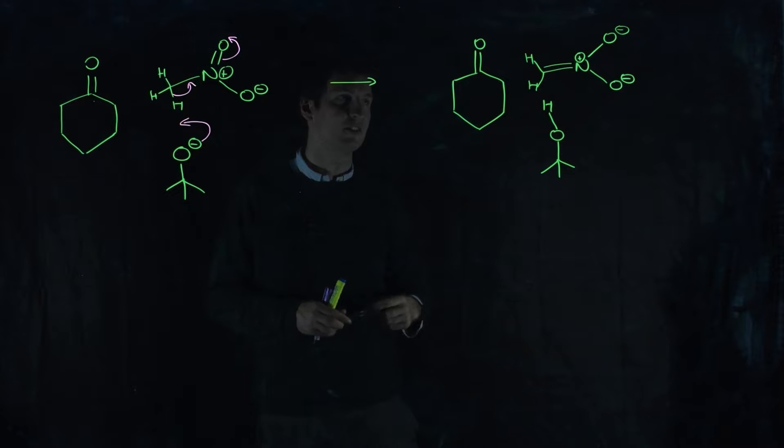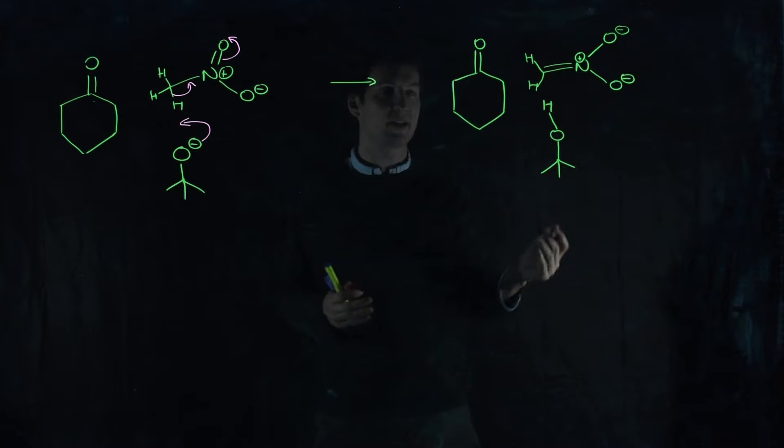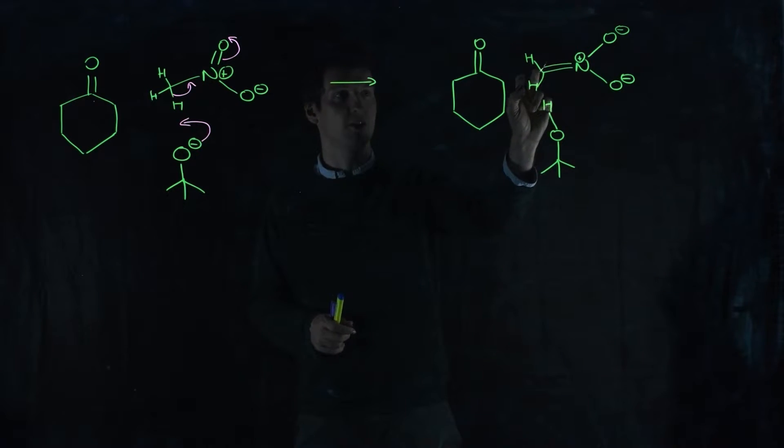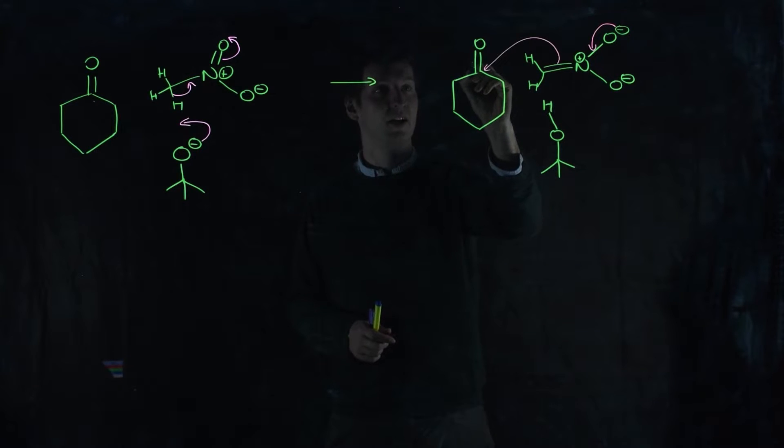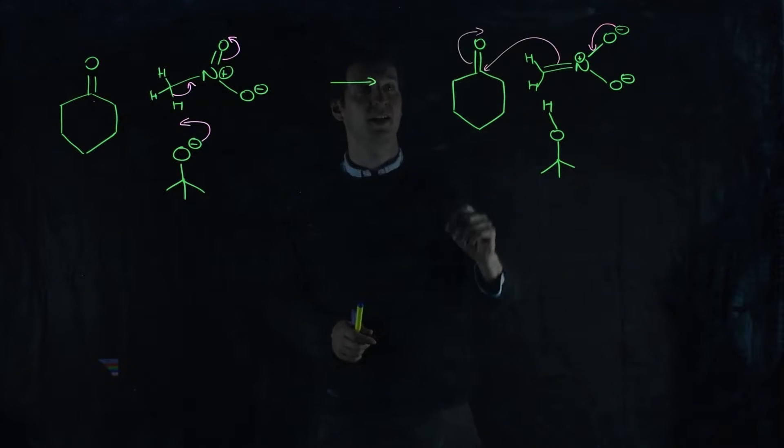How does that go? Our carbon is going to be our nucleophile and this the electrophile, the carbonyl carbon. We reform one of the nitrogen-oxygen double bonds, doesn't matter which one, and break this carbon-carbon double bond. Use those electrons to form a new carbon-carbon bond here and break the carbon-oxygen bond to form what's usually a tetrahedral intermediate.